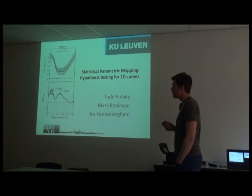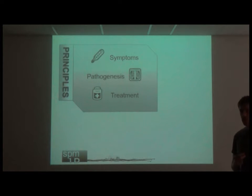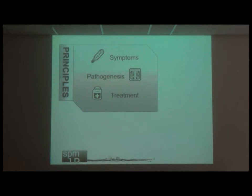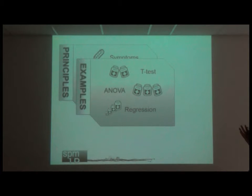To give an overview of the plan for today: first I will address the fundamental principles of statistical parametric mapping. Because I'm in a medicine environment, I will do that by identifying the typical symptoms in this type of research, what the pathogenesis — or real cause — of the problems is, and what a suitable treatment might be. Then I will provide examples: a t-test example, an ANOVA example, and a regression example.